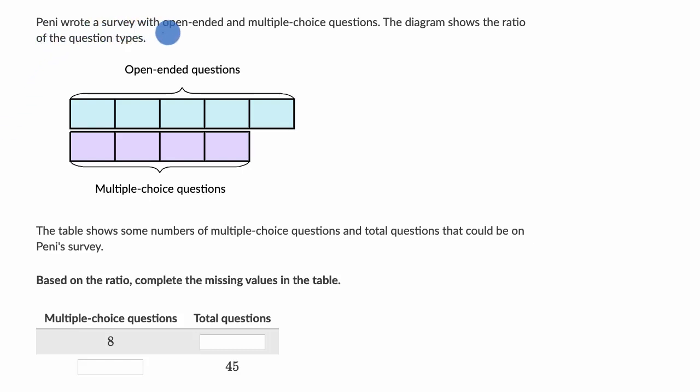We're told that Penny wrote a survey with open-ended and multiple choice questions. The diagram shows the ratio of the question types. So what it shows us is that for every one, two, three, four, five open-ended questions...